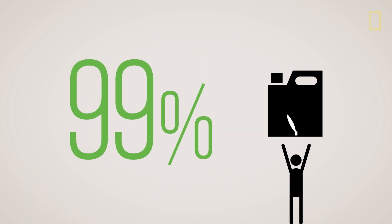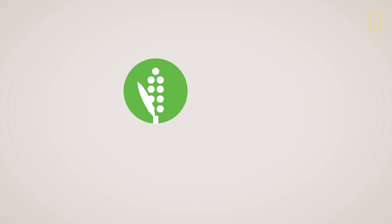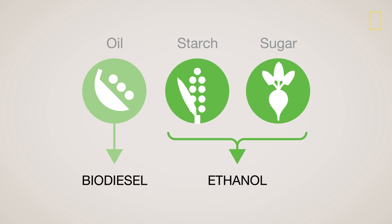In 2011, almost all biofuels produced and consumed worldwide were made from food crops. Manufacturers ferment starches from corn and sugars from beets and sugarcane to create ethanol, and fermented oils from soybeans and palm fruits become biodiesel.